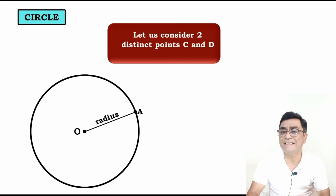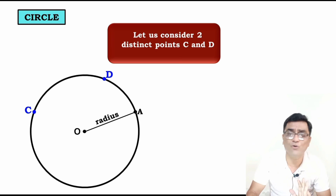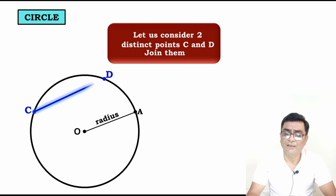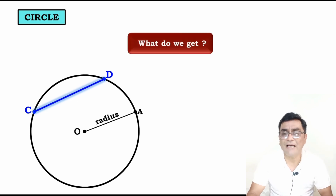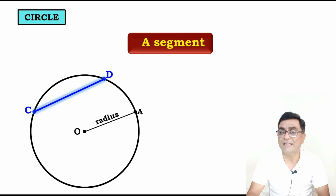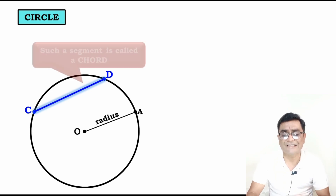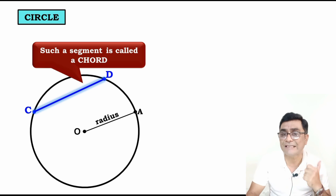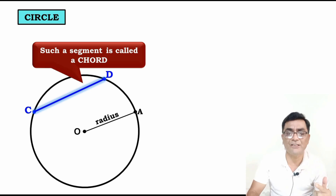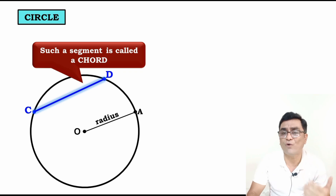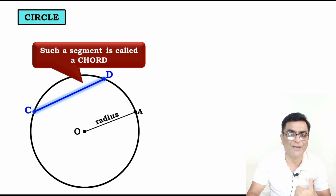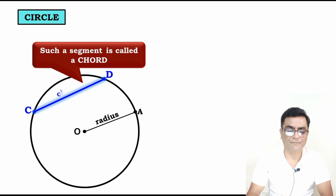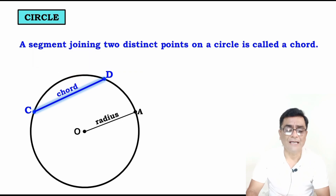Let us consider two distinct points C and D on the circle. If we join C and D, we get a segment. Such a segment is called a chord. A chord is a segment joining any two distinct points on a circle.